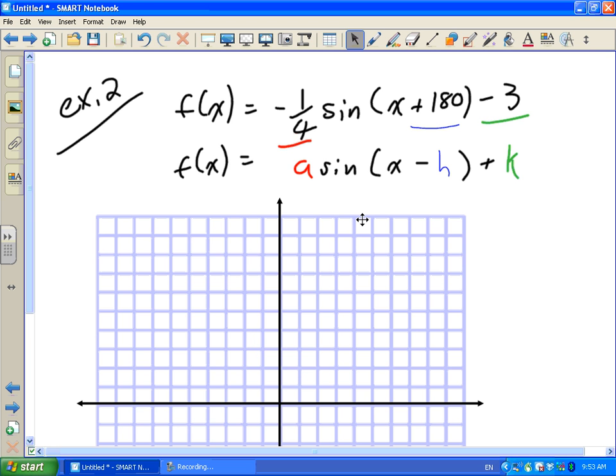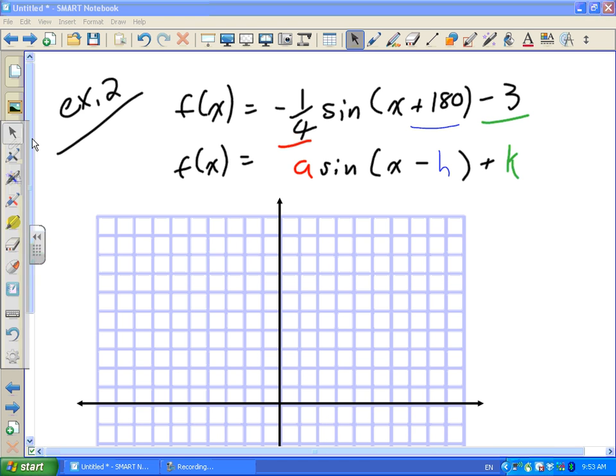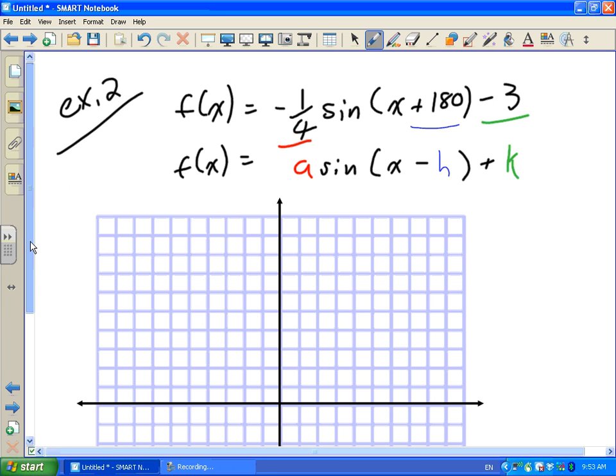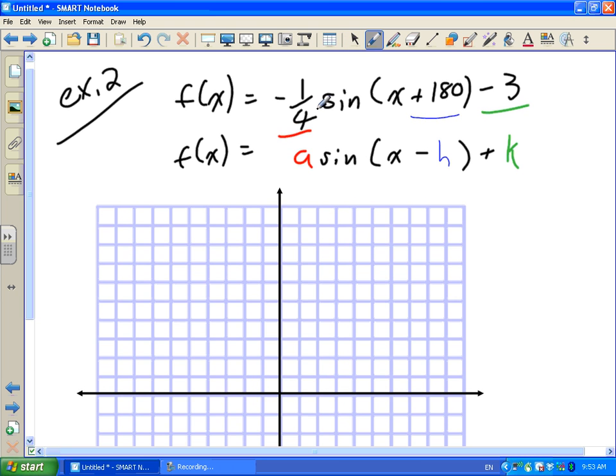First thing I want to make sure you know how to do is when you look at this, we're going to have to scale our own graph. The graphs on the test I'm going to give you are blank, so you're going to need to be able to do this by looking at the equation. So this is negative 1 quarter, you can also convert that to negative 0.25.